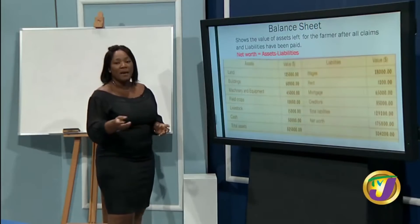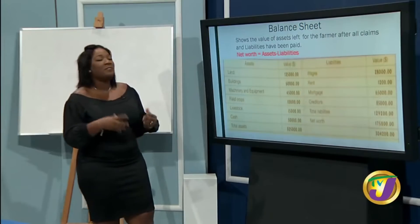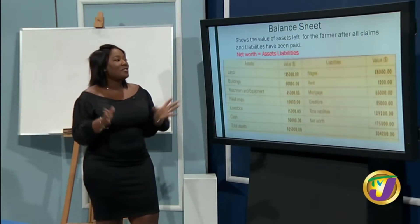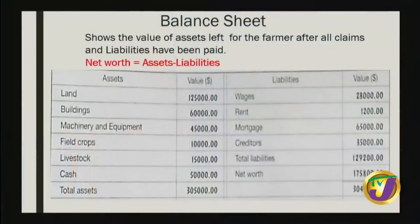A balance sheet in farming shows the value of assets left for the farmer after all claims and liabilities have been paid — what remains is called net worth. Assets include familiar terms such as land, building, machinery, and crop. Liabilities include wages, rent, mortgage, and creditors. For example, assets of $305,000 minus liabilities of $304,200 gives the net worth.